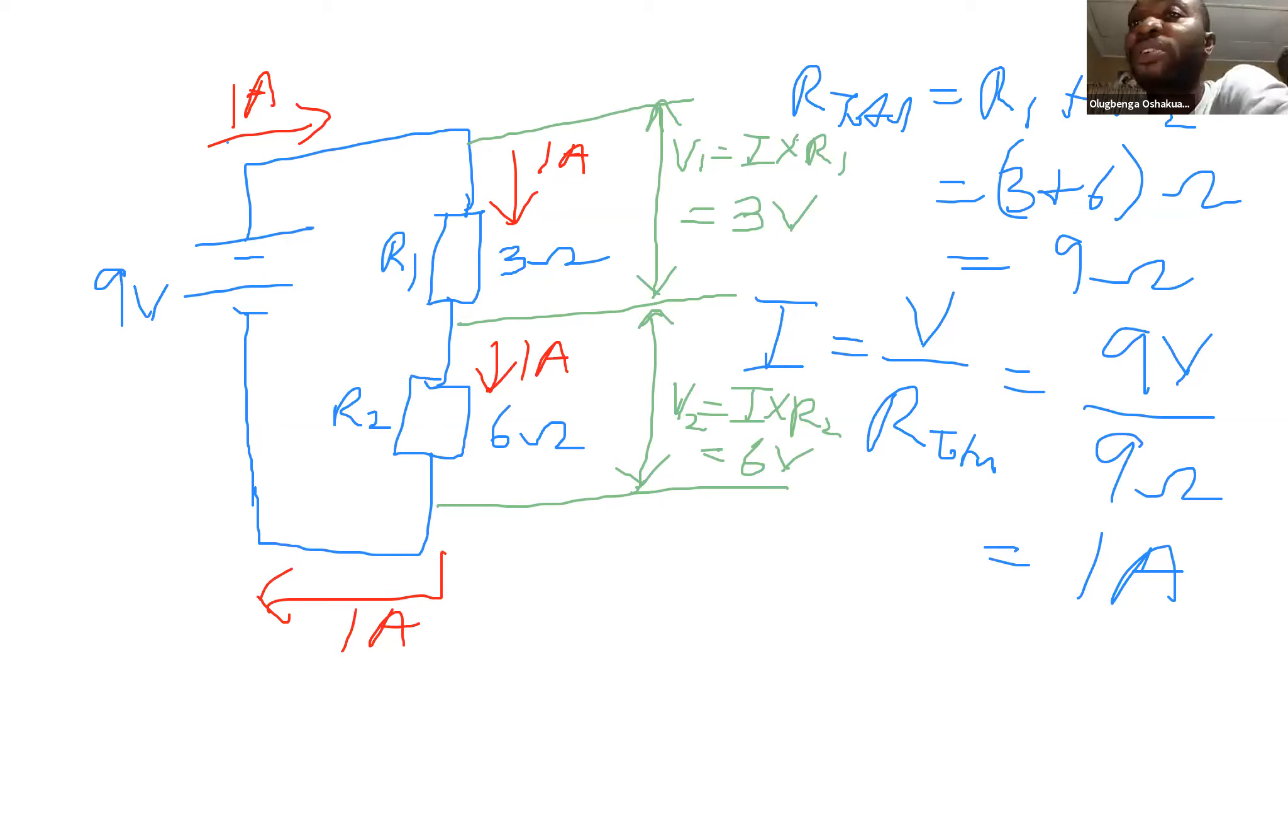One point that should have crossed your mind right now is that when we add the 3 volts that has dropped across R1 to the 6 volts, you would add the total voltage supply to the circuits, which is 9 volts.